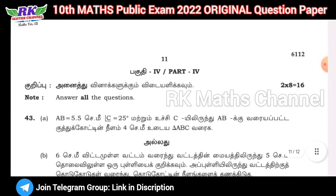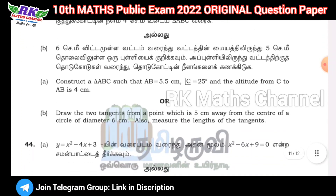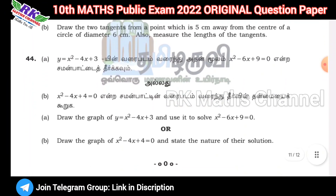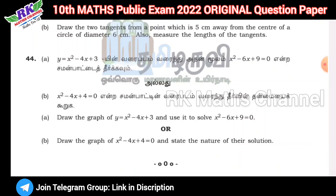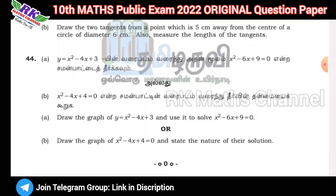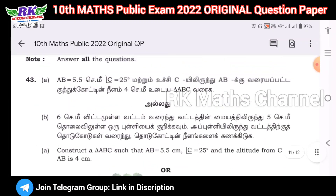The first part covers geometry. Next is the graph section — last year's graph based on the reduced syllabus. The graph alpha variation is reduced by 100%. This question is from the 2022 original public exam question paper.